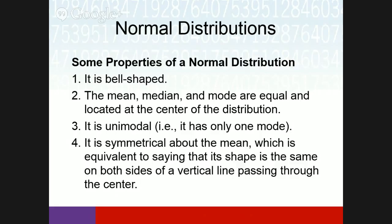It only has one mode. It's symmetric about the mean, which means the shape is the same on both sides of the vertical line passing through the center. This is very important because we can't apply normal distribution without this symmetry — a z-value on the right corresponds to the same area as the equivalent negative z-value on our table.